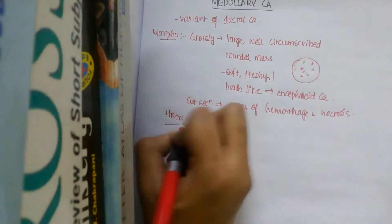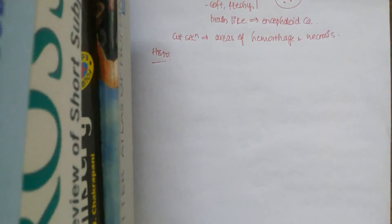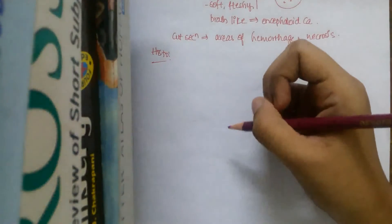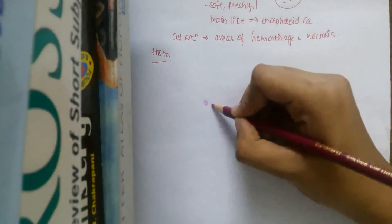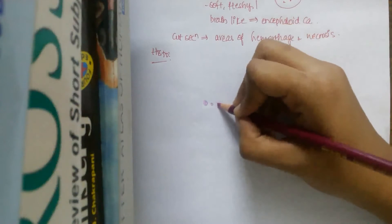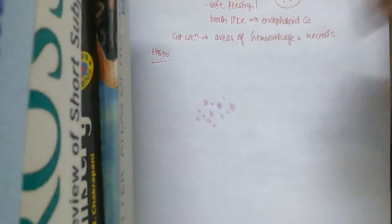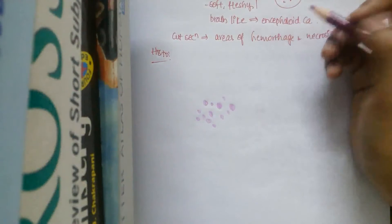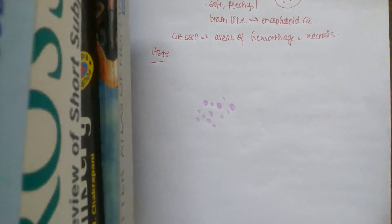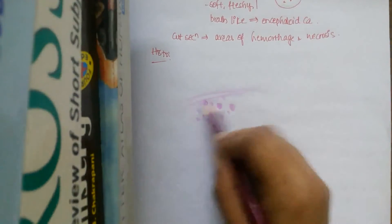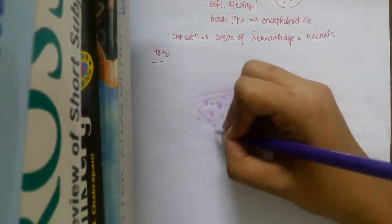What is the histological picture? Histologically, like any other tumour, it has tumour cells and stroma. Here the stroma is very less. The tumour cells are pleomorphic with large vesicular nuclei. This is a variant of ductal carcinoma but it generally doesn't show much of the ducts, because the stroma is very scanty and the tumour cells are mixed within it.